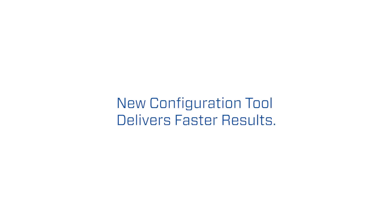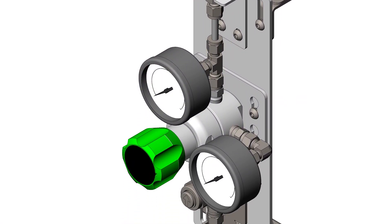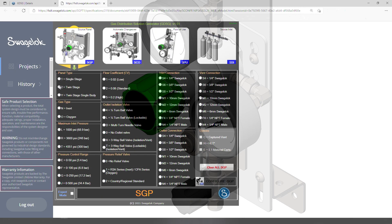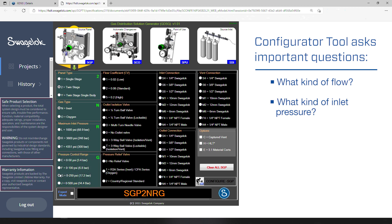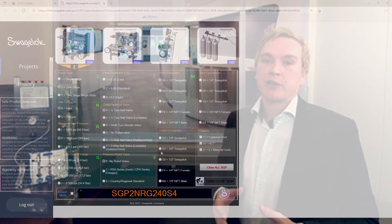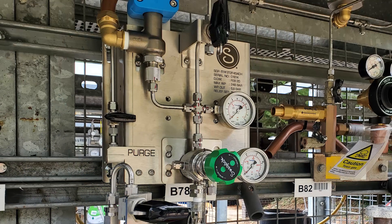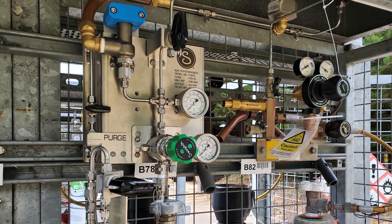The gas distribution configuration tool helps the customer understand what the assembly is actually going to look like when it gets to their facility. It will ask important questions that are relevant for product selection: what kind of flow, what kind of inlet pressure, what kind of outlet pressure, and what kind of gas you have in your system. With the help of these questions you will get the most effective and safe system.